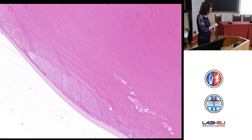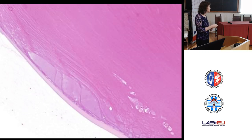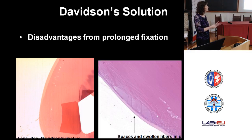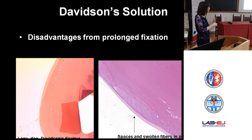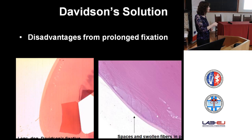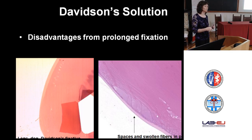We have to be careful not to misinterpret changes as cataractous change when they are the result of prolonged fixation — in this case, the lens was kept in Davidson's fixative for too long. There are also some obvious artifacts here. We need to be careful: if there is nothing else, it may just be a fixation artifact. When we have multiple changes including mineralization, that would allow us to confidently talk about cataractous change.